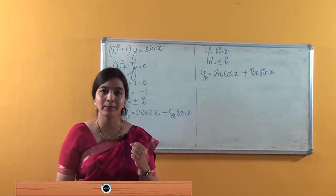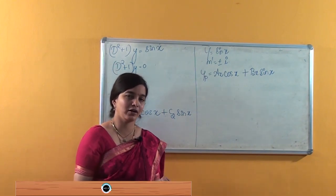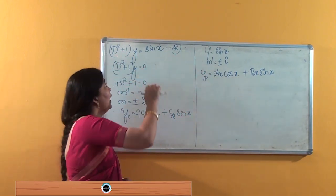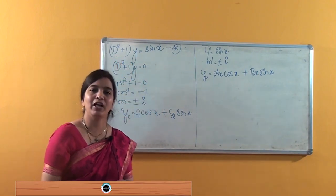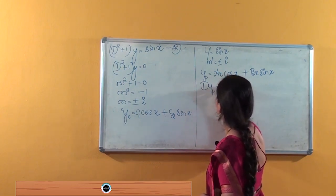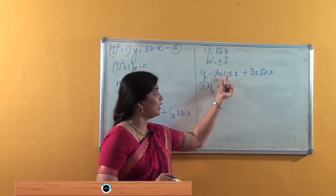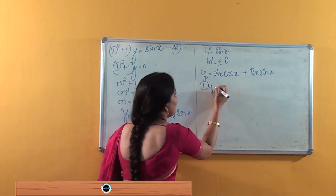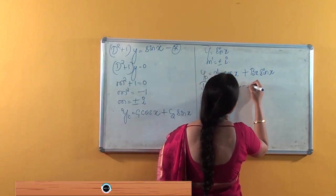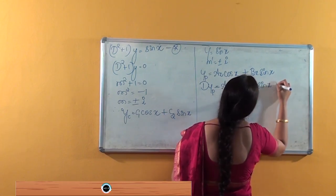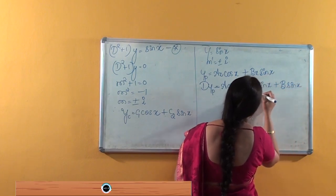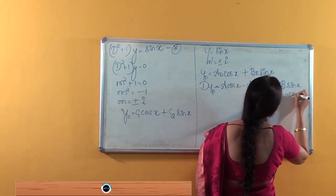Now we have to find the values of A and B. We find dyp and d²yp, then substitute into the original equation. Differentiating yp using the product (UV) rule: dyp = A cos x − Ax sin x + B sin x + Bx cos x.